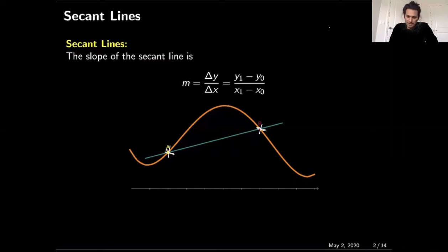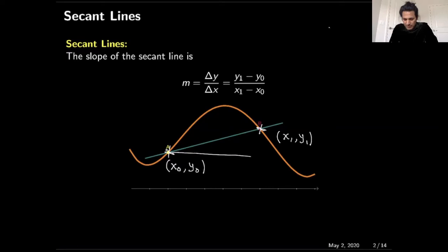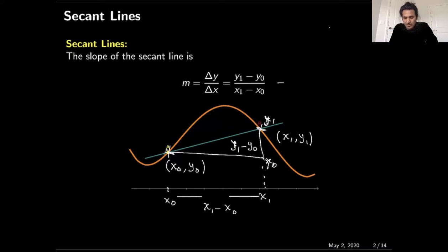To calculate the slope of the secant line, we first calculate the values of these two points. If this point is x0 with y-value y0, and this point is x1 with y-value y1, then the slope of the secant line — a line passing through these two points — is rise over run. The rise is y1 minus y0 and the run is x1 minus x0.